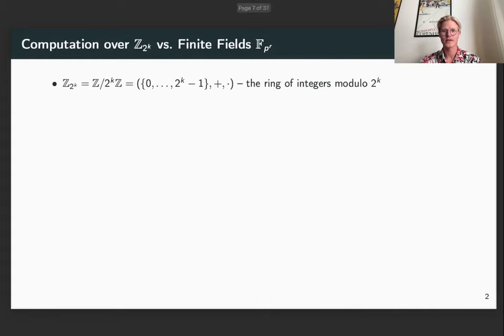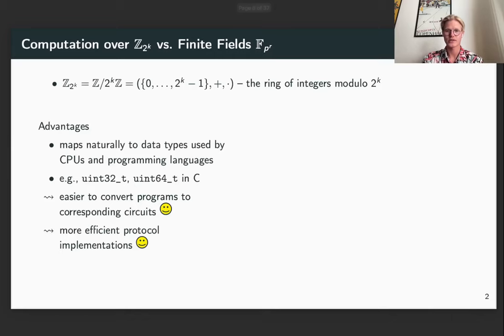We always consider computation over Z2K rather than finite fields, so this is the ring of the integers modulo 2^K. This has several advantages, primarily it maps naturally to data types used by CPUs and programming languages, so that it's easier to convert programs to corresponding circuits, and in turn leads to more efficient protocol implementations.